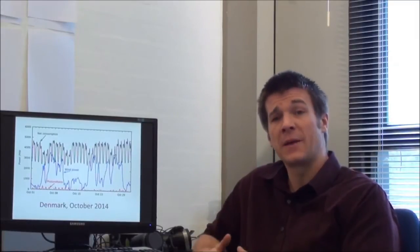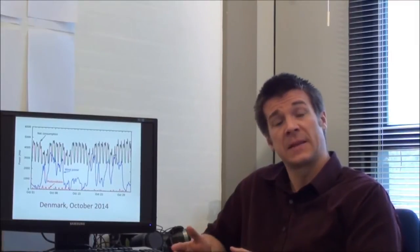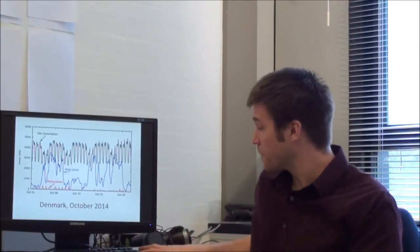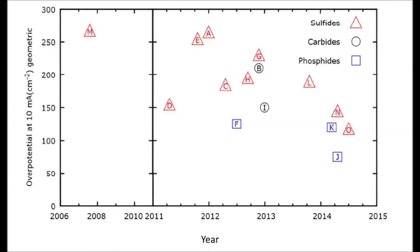It originally started around 2005 when computational chemists discovered that MoS2 actually had certain faces that were quite active. And as our chart plots the years versus the overpotential, people working on MoS2 have been able to reduce that overpotential slowly over time to the point now where it is quite low after about 10 years.